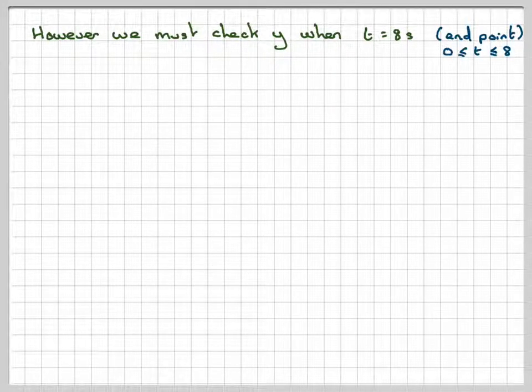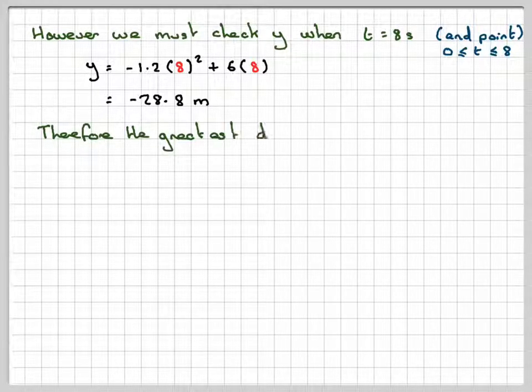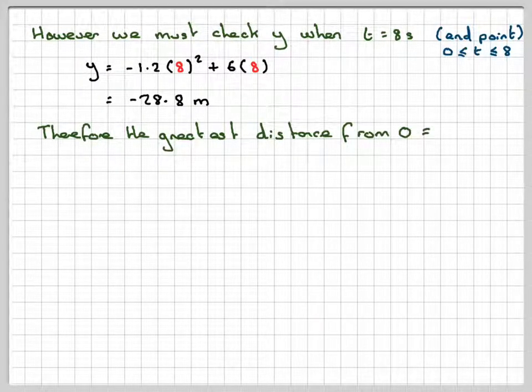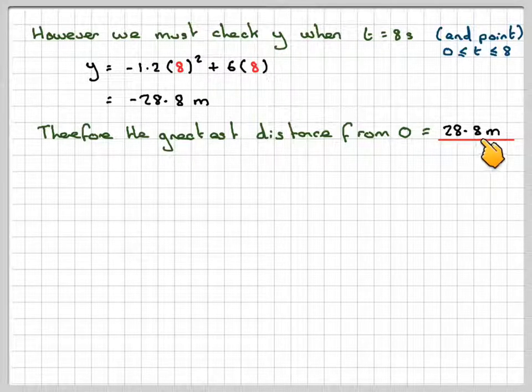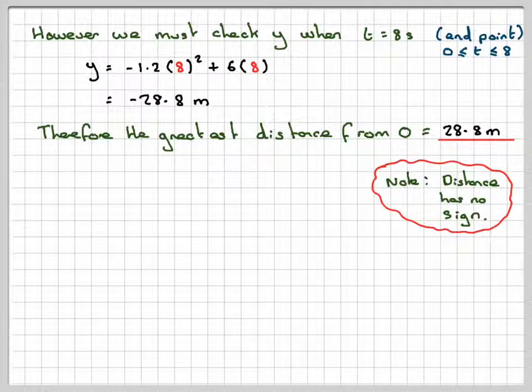At the end point, when t is 0, we don't need to do that because we know at 0 the particle's at the origin. So y will be equal to -1.2 × 8² + 6 × 8, which gives me -28.8 metres. Now, obviously, that's bigger than the 7.5 that we found in the first part. Therefore, the greatest distance from O that the particle will reach will be 28.8 metres. Notice we don't put minus 28.8 metres because distance is a scalar quantity. It has no sign.